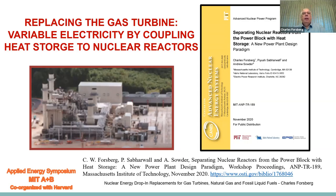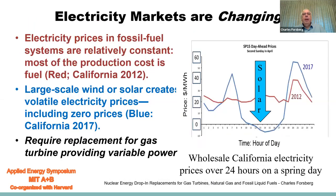First, let's discuss replacing the gas turbine that provides variable electricity by coupling heat storage to nuclear reactors. We have a series of workshops and papers available if you have an interest. Electricity markets are changing. Electricity prices in fossil fuel systems are relatively constant because most of the production costs are in the fuel. This is seen in the figure showing the price of electricity over 24 hours in California. In 2012, the system was dominated by fossil fuels, and the price curve shown in red is relatively flat except for an evening peak.